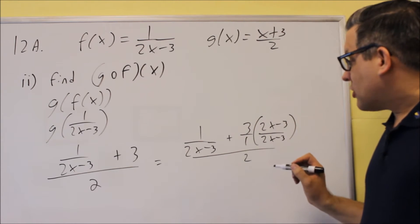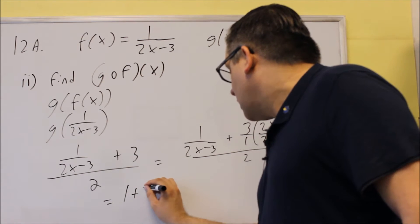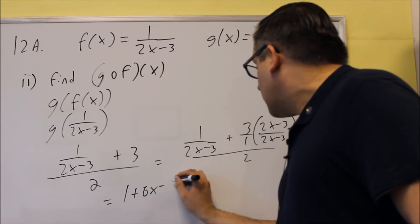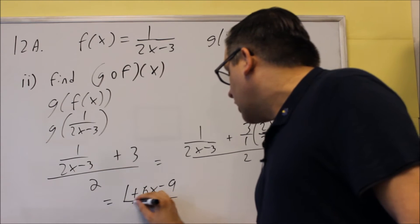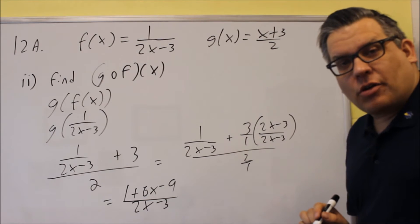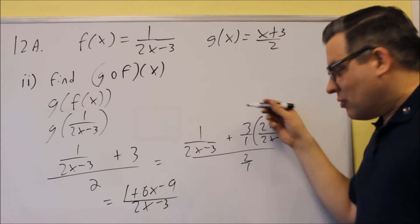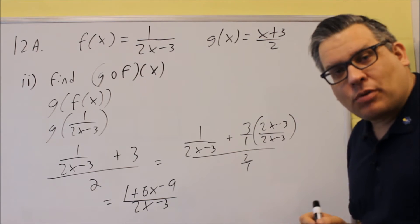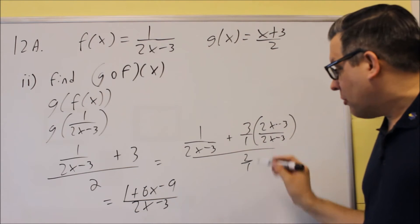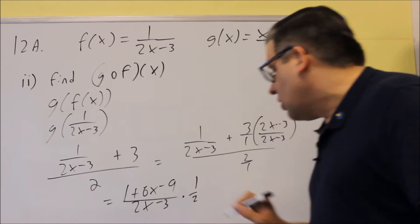Once I do this, what I'll have is 1 plus 3 times 2x minus 3, which gives 6x minus 9, all over our common denominator of 2x minus 3. Now about the 2 that's down here: once I get a single fraction on top, dividing by a fraction is the same as multiplying by the reciprocal. So this whole thing on top turns into that fraction, and I'm going to multiply by the reciprocal of 2 — multiply by 1 half.